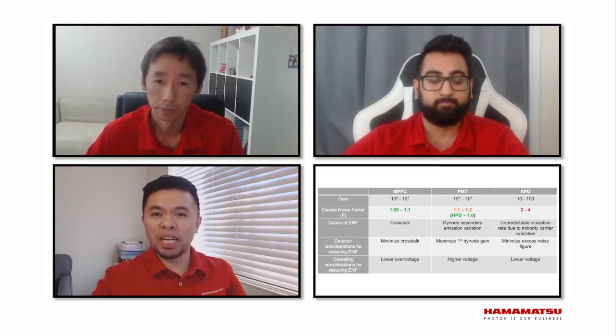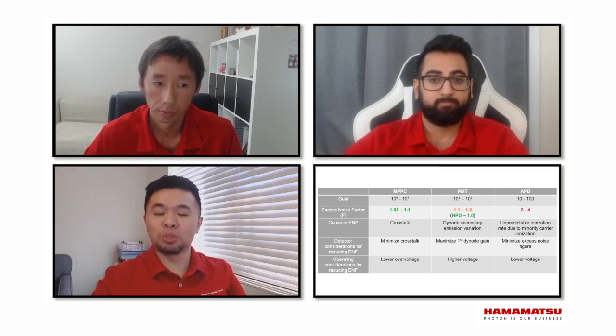That sounds like a good topic to dive into more deeply in the next podcast. For now, can you give us an idea what the typical excess noise is from best to worst for the different detectors? The best or cleanest gain would be the HPD, which has an F factor of approximately one. MPPC would be next, around 1.05 to 1.1. PMT is around 1.1 to 1.2, and APD has probably the most fluctuation with excess noise factor between two and six.